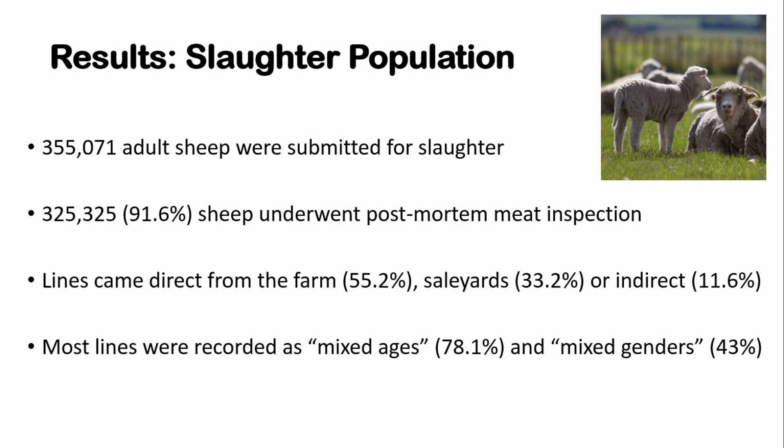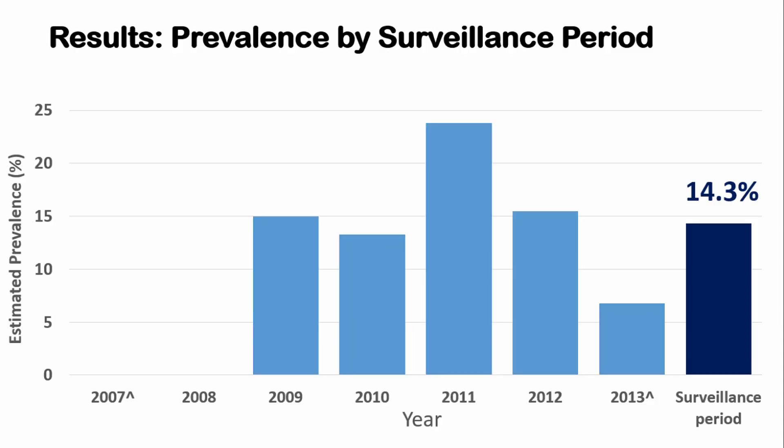The results were that 3,571 adult sheep were submitted to slaughter. Of those, 91.6% underwent inspection — a number were rejected prior to post-mortem meat inspection at ante-mortem examination. The lines of sheep came direct to the slaughterhouse from the farm, from the sale yards, or as boxed or indirect batches that could be mixed from different farms. Most of the batches were recorded as mixed age and mixed gender.